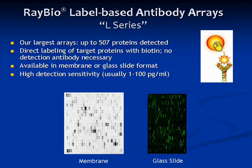The label-based array, or L-Series, is our largest series of arrays with up to 507 proteins detected. In this array, the target proteins within the sample are directly labeled with biotin, which eliminates the need for a biotinylated detection antibody. The L-Series is available in either membrane or glass slide format, and has a very high detection sensitivity of usually 1 to 100 pg per ml. Shown below are the output data from the L-Series arrays. Computer software is available to facilitate array-to-map cross-referencing.